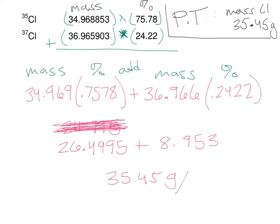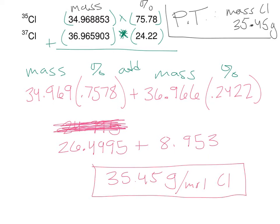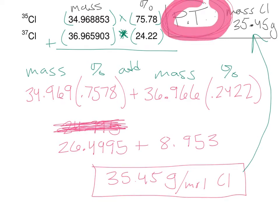Rounding my final answer, I get 35.45 grams per mole of chlorine — the same value from the periodic table. Notice that matches exactly what I predicted, because it came from the periodic table of elements. I'll go ahead and highlight that value a couple of times just to show how important it is.